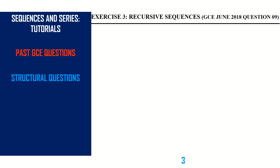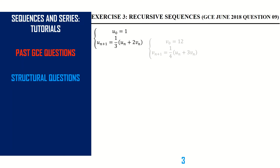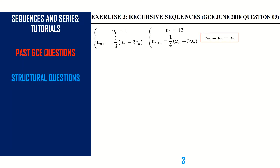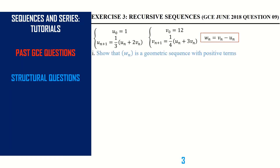We are going to start straight away with the solution of the first part. These are the informations that were given to us originally in the equation. Roman I is asking us to show that the sequence w(n) is geometric with positive terms.